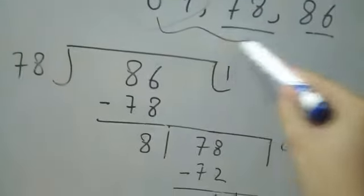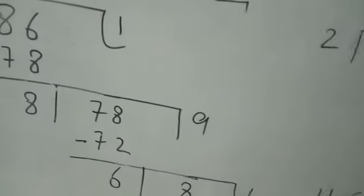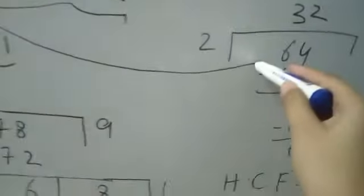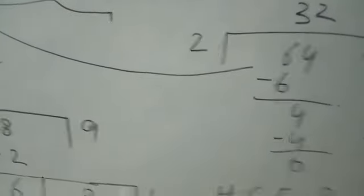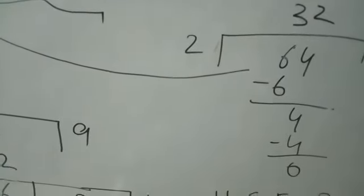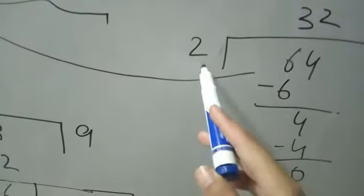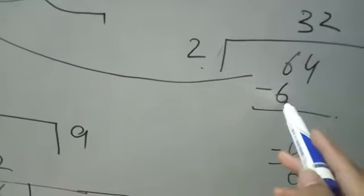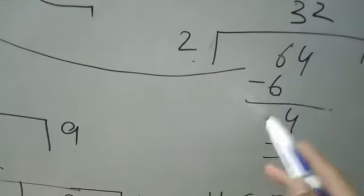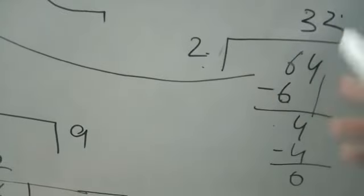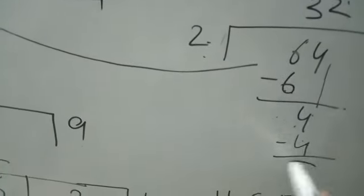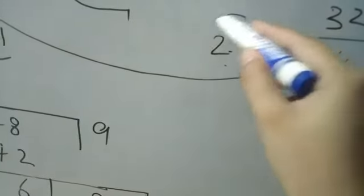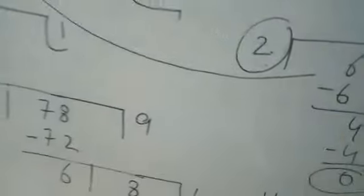We need to find the HCF of all three numbers. The last divisor here is 2, which is the HCF of 78 and 86. Now we take 64 and divide it by 2: 2 threes are 6, 6 minus 6 gives 0, 4 comes down, 2 twos are 4, 4 minus 4 gives 0. The last divisor is 2, which is the HCF of 64, 78, and 86.